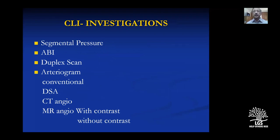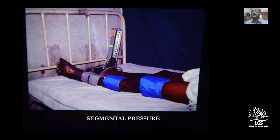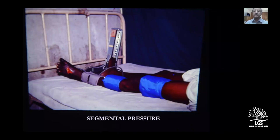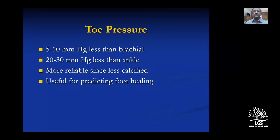Investigations for lower limb ischemia include: segmental pressure measurement, ankle-brachial index (ABI), duplex scan, and angiograms (conventional DSA, CT angiogram, MR angiogram with or without contrast, and carbon dioxide angiogram). In segmental arterial pressure, a drop of more than 15 mmHg between segments indicates arterial occlusion. Toe pressure is more important than ankle pressure because digital arteries calcify less than tibial arteries; toe pressure is typically 5–10 mmHg less than brachial and 20–30 mmHg less than ankle, making it more reliable for foot or toe amputation healing assessment.